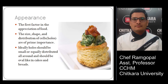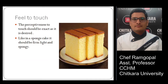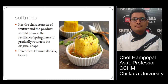The next type is feel to touch. Whenever you are having a food product, it needs to be perfect. The perceptiveness to touch should be exactly as desired — like in a sponge cake, it should be firm, light, and spongy.